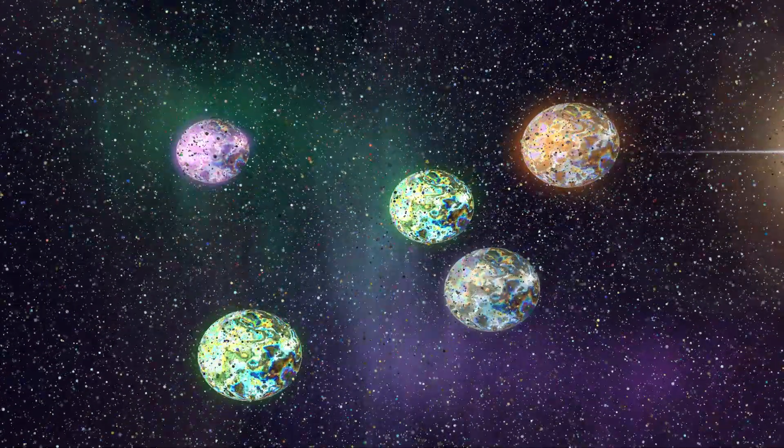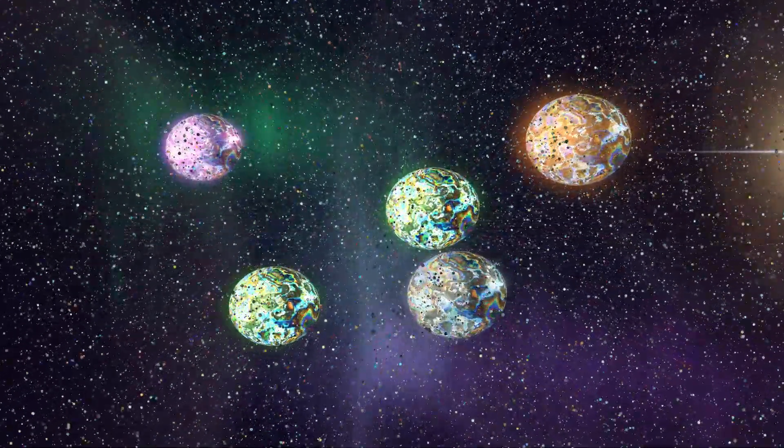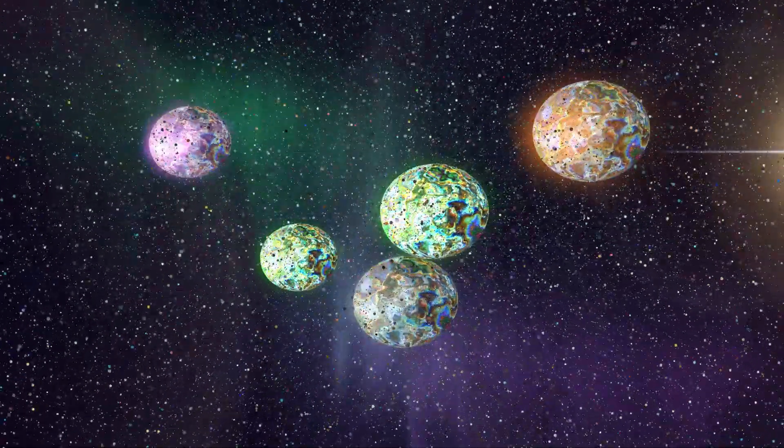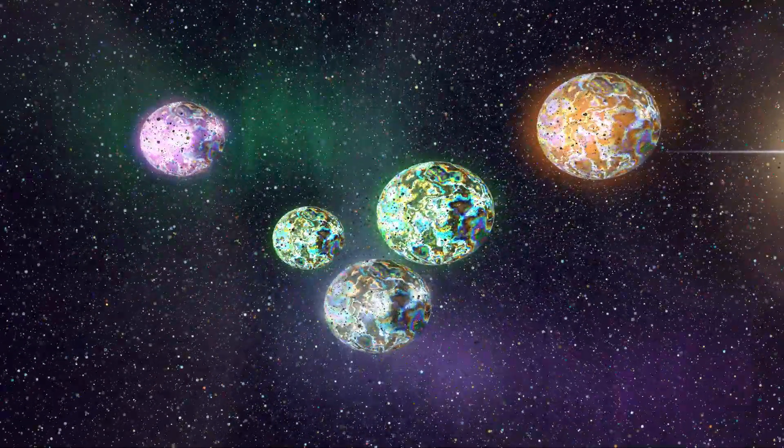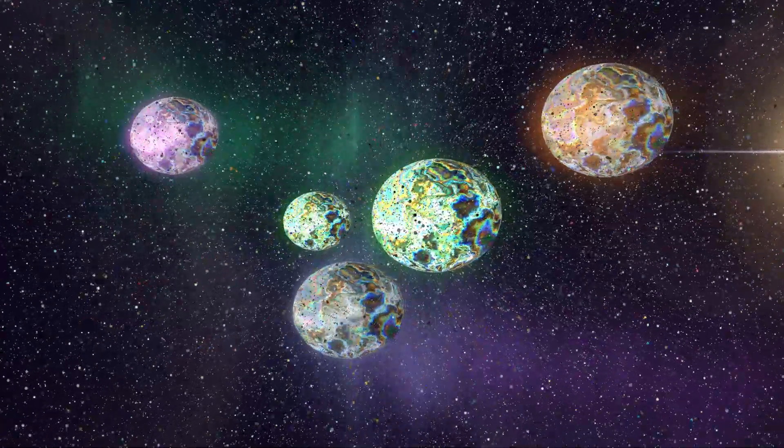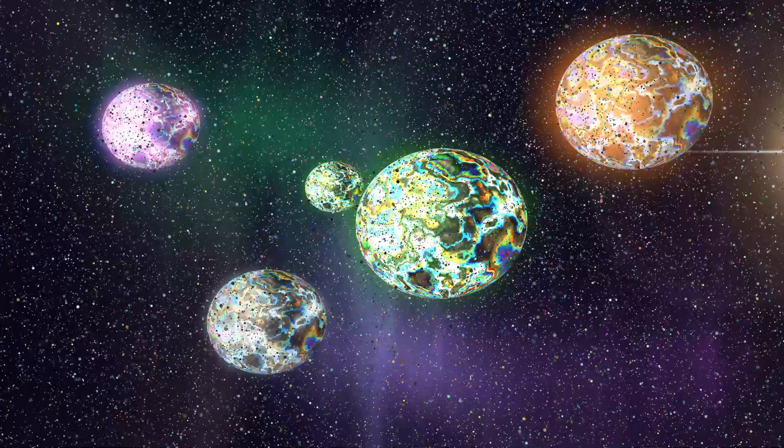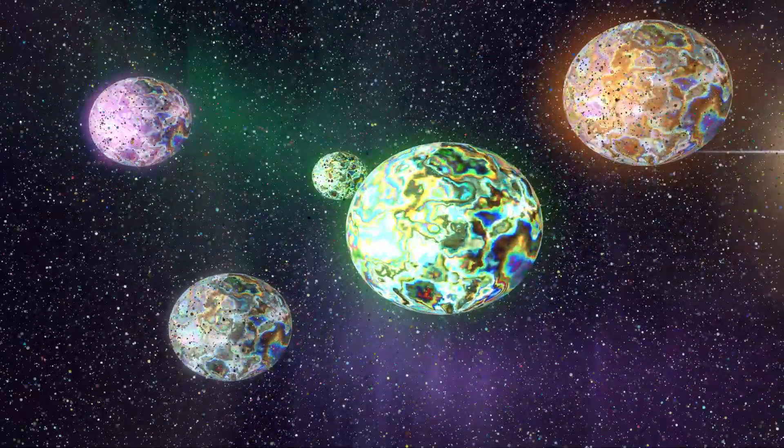The multiverse theory offers a tantalizing solution to the question of why our universe appears finely tuned for the emergence of life, an observation known as the Anthropic Principle. It suggests that our universe is just one of countless branches in the cosmic tree of existence, each with its own story to tell and mysteries to unravel.